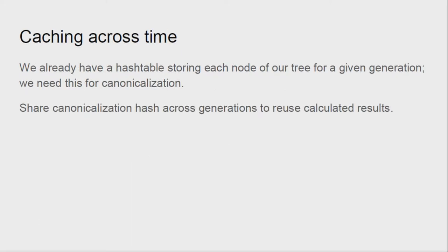Next thing we want to do is we want to save this information across time. And the way we do that is instead of having one hash table for canonicalization of one quadtree and another one for the next generation, we share the same hash node for all the generations. And that way we can preserve and use these cached results across time.